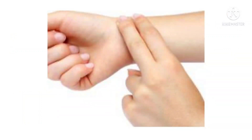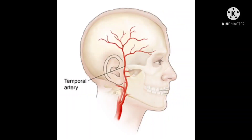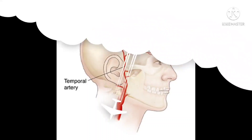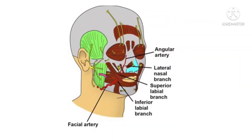In human anatomy, the superficial temporal artery is a major artery of the head. It arises from the external carotid artery when it splits into the superficial temporal artery and maxillary artery. Its pulse can be felt above the zygomatic arch, above and in front of the tragus of the ear.